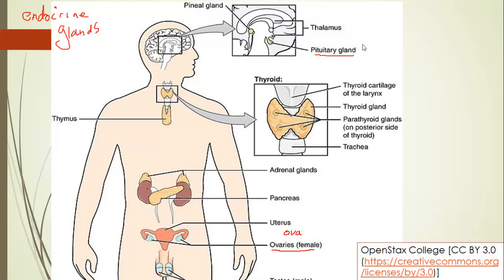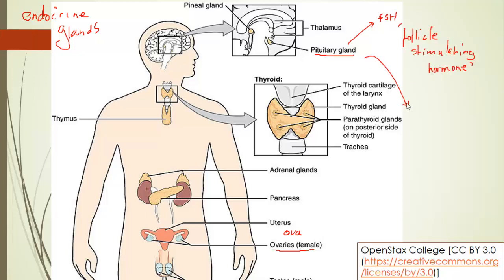The pituitary gland produces two hormones in particular that we're interested in today. That is FSH, which is follicle stimulating hormone, and LH, which is luteinising hormone. Luteinising because it means 'turns yellow', and we'll think about the significance of that a little bit later.